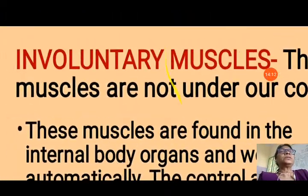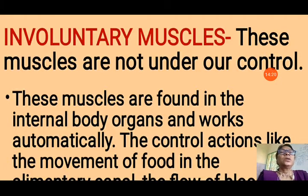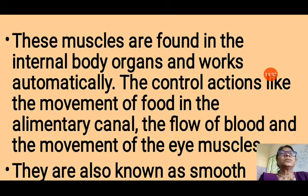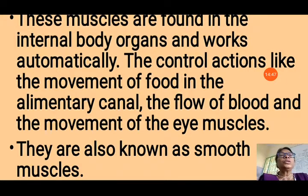Now, involuntary muscles. These muscles are not under our control, which is why they are known as involuntary muscles. They are found in the internal body organs and work automatically. We cannot control actions like the movement of food in the alimentary canal, the flow of blood, or the filtering of blood by the kidney. They are also known as smooth muscles because they are not connected to any bone or skeleton.